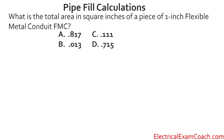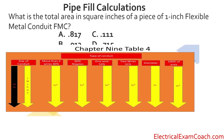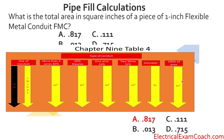Final question: What is the total area in square inches of a piece of 1-inch flexible metal conduit? For this one we head straight to Chapter 9 Table 4, verify we're in the flexible metal conduit table, find 1-inch on the left, then cross all the way over to the 100% fill area column. I have been tested on this in the past, so know this column well. The answer is 0.817 square inches.